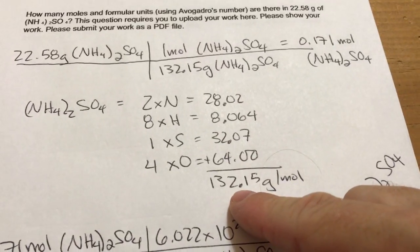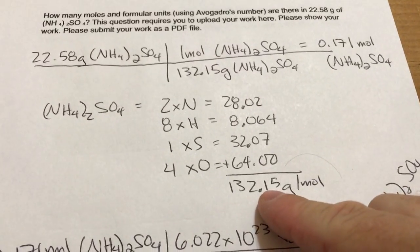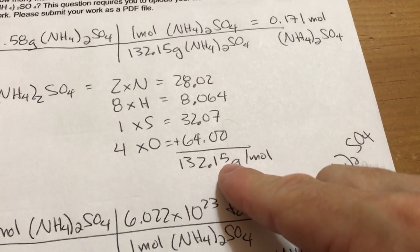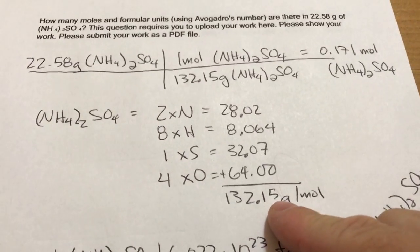So 132 in this case would be wrong. 132.1 would be fine, or 132.15 is also fine for calculations.